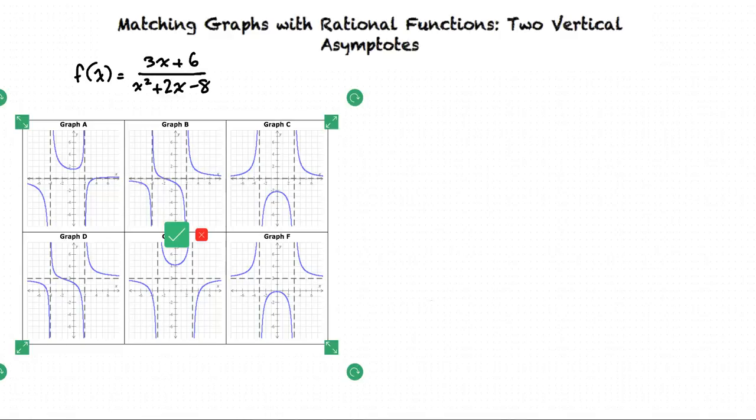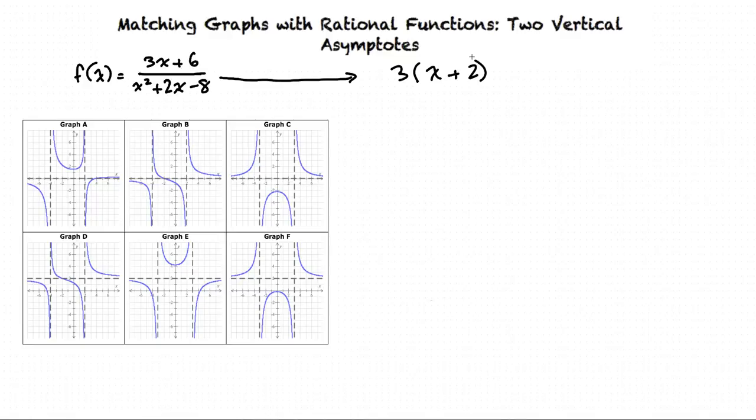We can factor the numerator to 3 times the quantity (x + 2), and we can factor the denominator to (x + 4) times (x - 2).